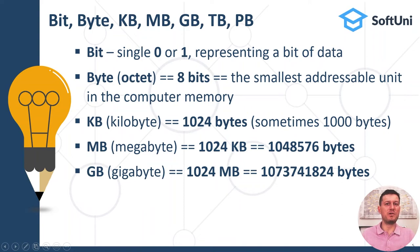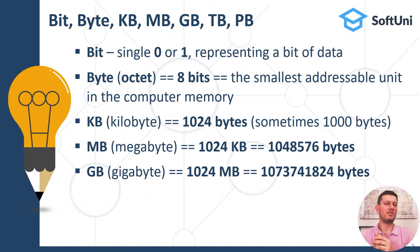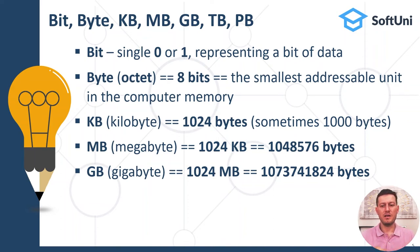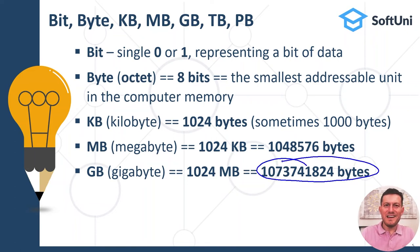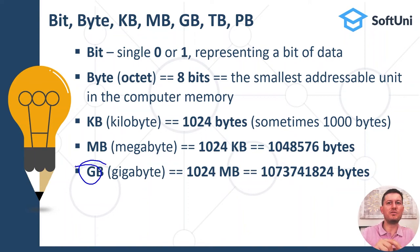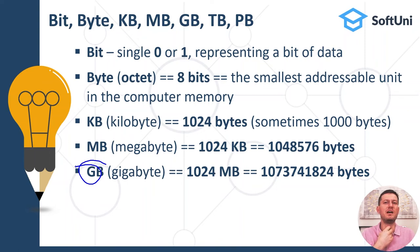Gigabytes is another popular measure in computer science. It consists of 1024 megabytes, so one gigabyte holds 1,073,741,824 bytes. For example, gigabytes are used when recording a one-hour-long video compressed in full HD quality, which typically takes a few gigabytes of storage on your drive, on the internet, or in the cloud.